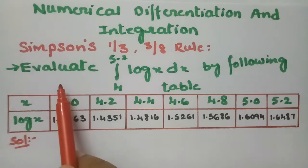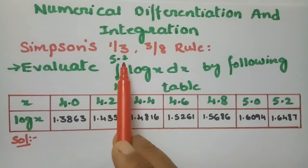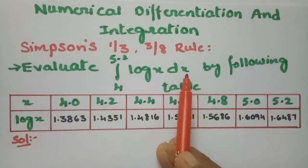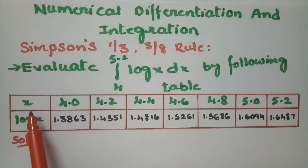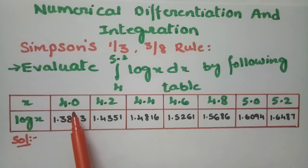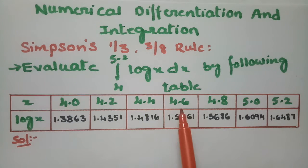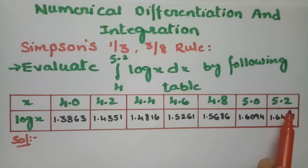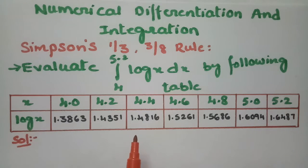We have to evaluate the integral from 4 to 5.2 of log x dx by using the following table. The x values given are 4, 4.2, 4.4, 4.6, 4.8, 5, and 5.2, and the corresponding y values — the log x values — are given here.